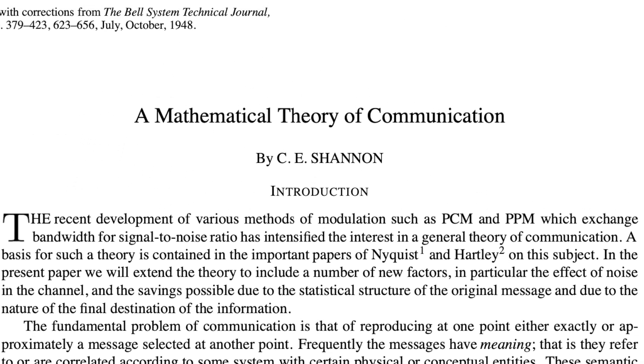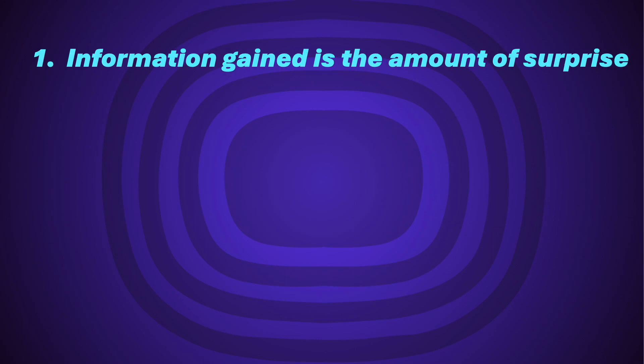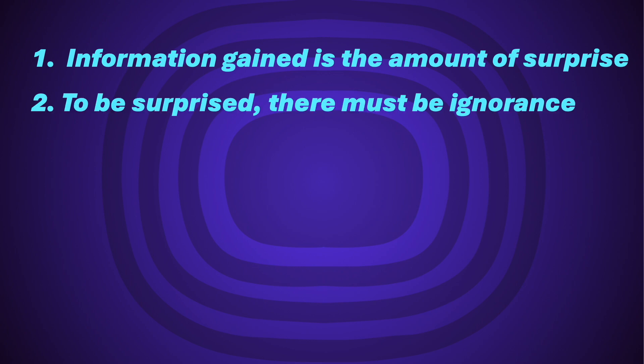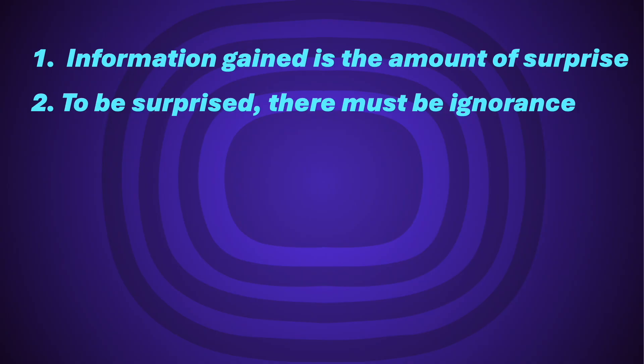To understand the nature of information and substantiate my claim that the existence of information implies a broken symmetry, we first look at what it means to gain information during a communication using information theory. In 1948, Claude Shannon introduced information theory in his paper A Mathematical Theory of Communication, where he defines information gained during a communication or observation as the amount of surprise. To gain information, you must be surprised. One: information gained is the amount of surprise. Two: to be surprised, there must be ignorance or uncertainty. And as I pointed out in my last video, entropy is ignorance, and ignorance implies symmetry — so to be surprised, there must be symmetry.